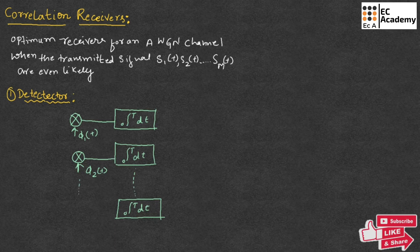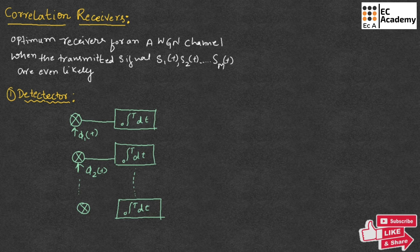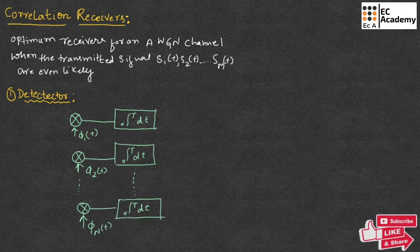Likewise, it will be having N orthonormal basis functions. So this is one more orthonormal basis function, phi N of T, which is supplied to the correlator.